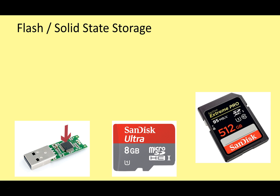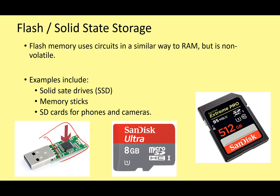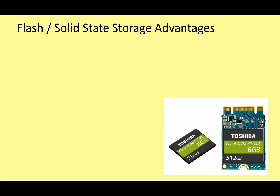Let's look at what we call flash or solid state storage — both terms refer to the same thing. This is very similar to RAM; you've got a chip on a circuit board. But unlike RAM, it's non-volatile, so when you turn off the power it still remembers its contents. Examples include solid state drives, memory sticks, and SD cards used in phones and cameras — all examples of the same flash or solid state technology.